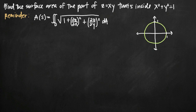Today we're going to talk about how to use double integrals to find the surface area of the part of the function z equals xy that lies inside x squared plus y squared equals 1. As a reminder, here is the formula for surface area using a double integral. The only complicated part is that we have to take partial derivatives of z with respect to both x and y.